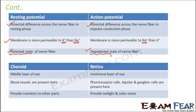Now let us look at choroid and retina. Choroid is the middle layer of the eye and retina is the innermost layer. In the choroid, blood vessels are present and that is why it provides nutrients to other parts of the eye. But the retina is the place where the image is formed — it consists of the photoreceptor cells, the bipolar and the ganglion cells, and it helps us to see things. It provides both twilight vision, which is provided by the rods, and also color vision, which is provided by the cones.